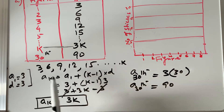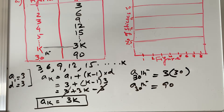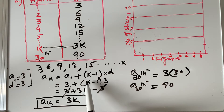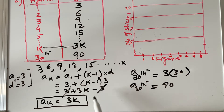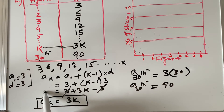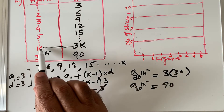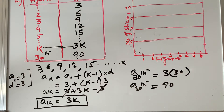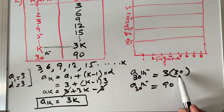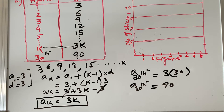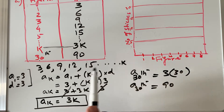Replacing n with k: the kth term equals 3 plus (k minus 1) times 3. Expanding: 3k minus 3, which cancels with the initial 3, giving ak equals 3k. To find the 30th term, replace k with 30: 3 times 30 equals 90. This general algebraic expression works for any figure number in the pattern 3, 6, 9, 12, 15, and so on.